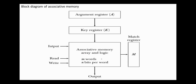Associative memory consists of an array of locations with the corresponding logic required for finding a match, an input for the write operation, read and write signals, and two registers: the argument register and the key register.